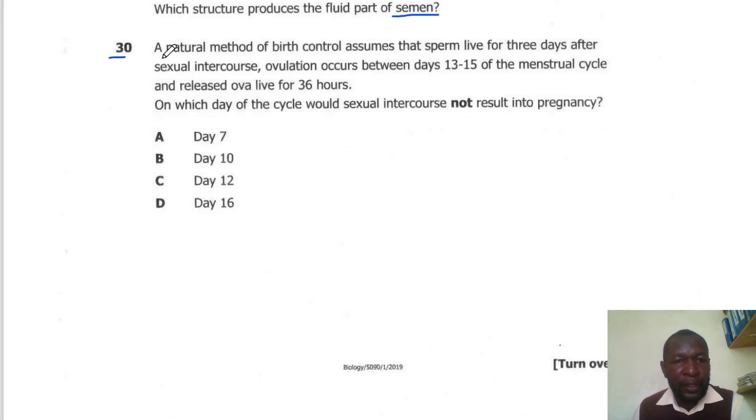Question 30. A natural method of birth control assumes that sperm live for three days after sexual intercourse. Ovulation occurs between day 13 and 15 of the menstrual cycle, and the released ovum lives for 36 hours. On which day of the cycle would sexual intercourse not result in pregnancy? You have to make sure it's not taking place closer to this day, and this can last for about a day plus. Any day after won't be tangible. The correct answer is day 7. Because day 16 is a day plus after ovulation, that would lead to conception. On any of these days the sperm will still be alive.